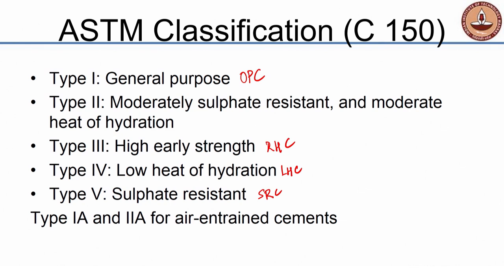American standards also allow air-entrained cements, where the air-entraining chemical is added during the cement manufacture itself to produce cement which already has these compounds in it. So you can have Type 1A or Type 2A air-entrained cements, which can be used for very specific purposes.